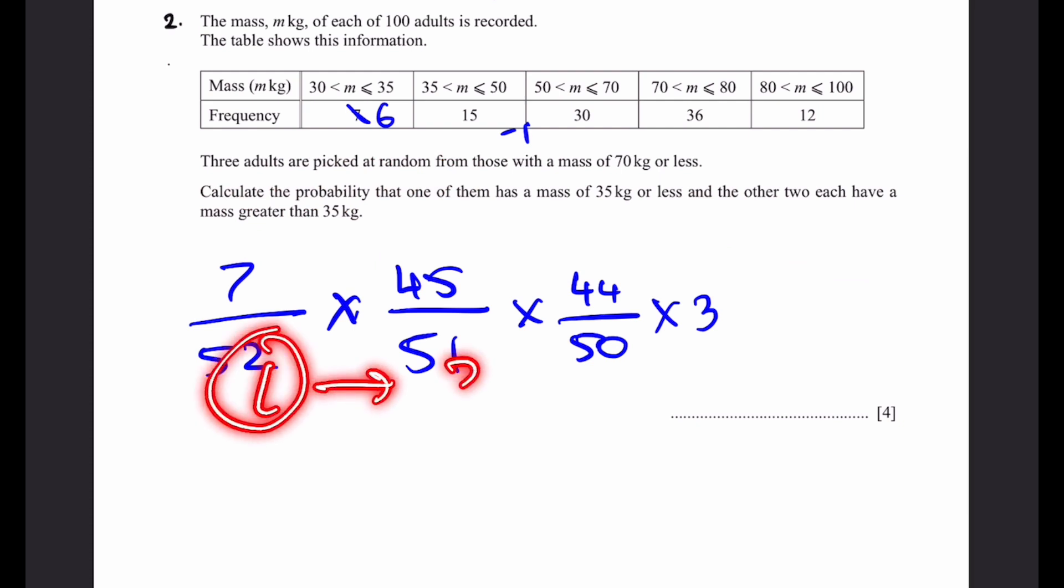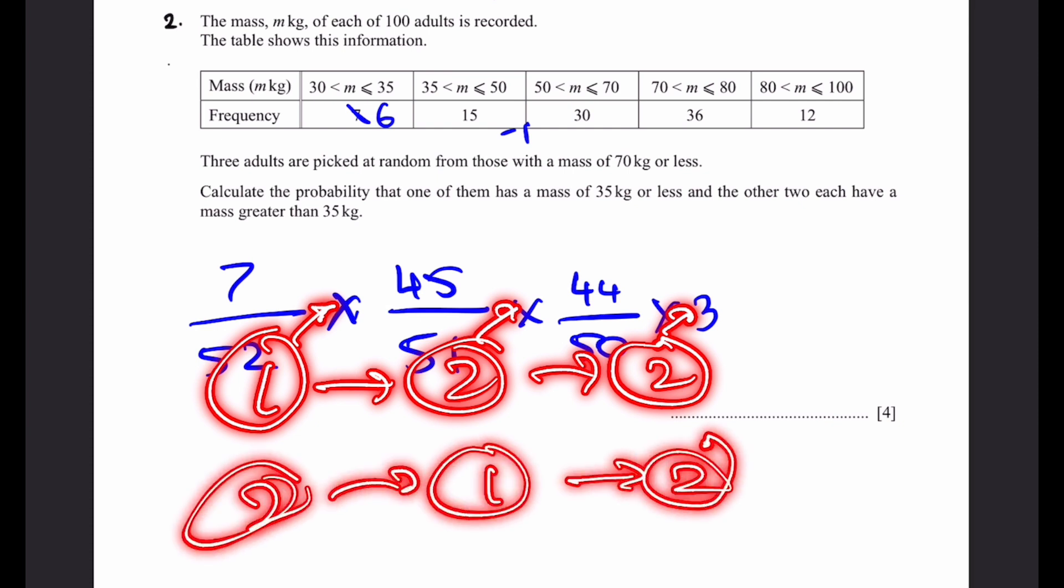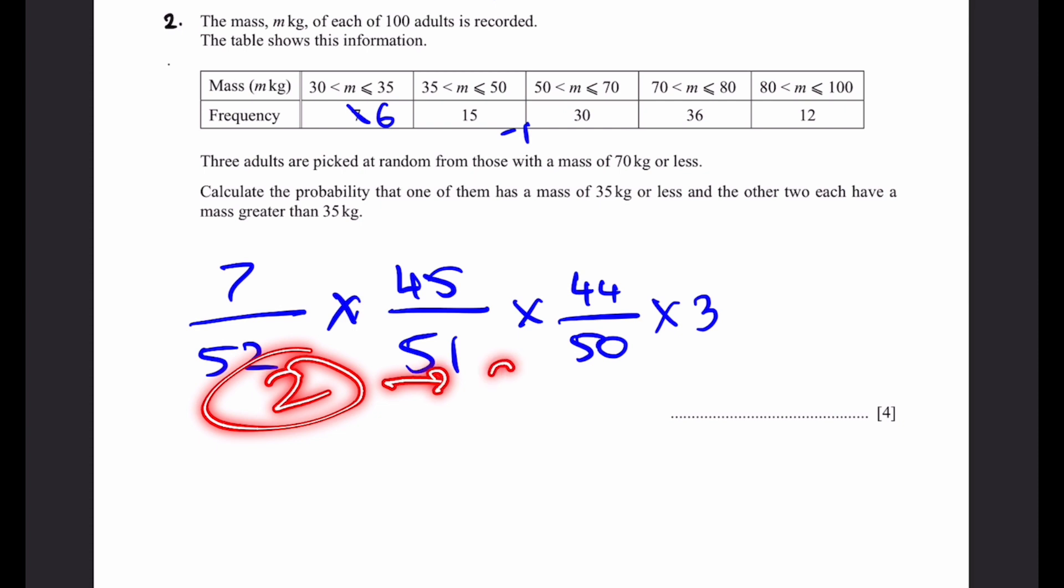We can arrange it in 1, 2, 2. So we can be selecting the first type first, and then the next two we select after. Or we can do it 2, 1, 2. We select the first type in the second position, and the first and third positions are the second type. Or we can do it in 2, 2, 1, which means the first type comes selected last. That's why we have three different methods of selecting, and that's why we have multiplication by 3.